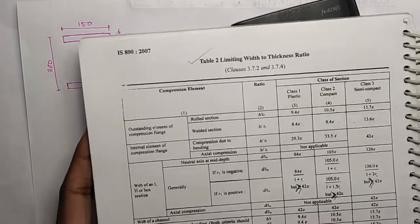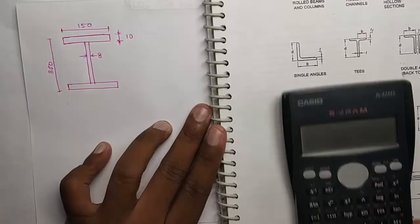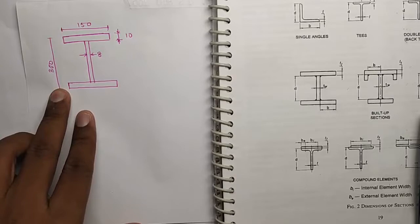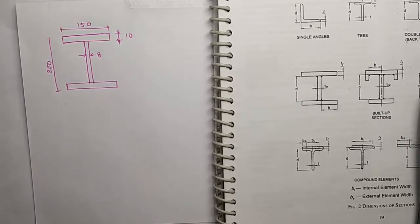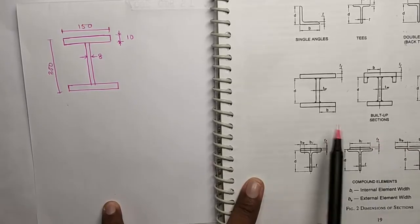And the B, TF, D, TW for different sections are given in the page 19. Now we'll do this for this section. You have to determine which class is this. So this is a built-up section. You see in the page 19, this is a built-up section.